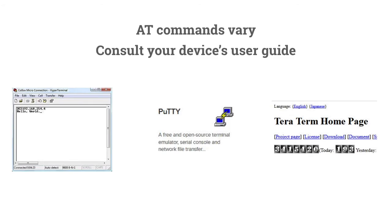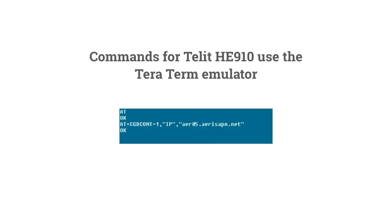The next step is to use a terminal emulator to program the APN into your device. Consult the AT command guide for your device or developer board to determine the specific command to use. This example shows the AT command for the TELL-IT HE910 radio module.